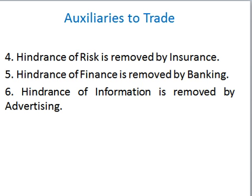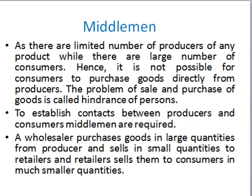First, we will discuss hindrance of persons, which is removed by middlemen. Goods are produced at a particular place but they are consumed throughout the world or throughout the country. So it's not possible for a producer to meet each and every customer to sell his product. Taking the example of shampoo — it is produced somewhere but consumed throughout India or throughout the world. So it's not possible for a producer to have direct contact with the consumer.